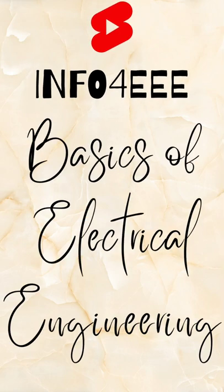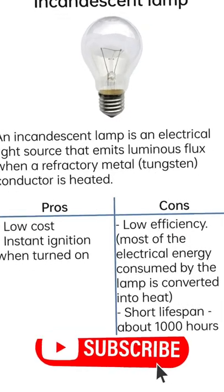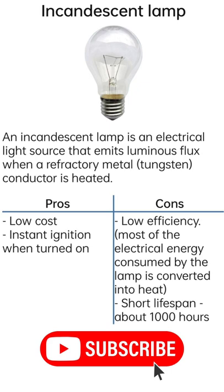Welcome to INFO 4EEE, Basics of Electrical Engineering. An incandescent lamp is an electrical light source that emits luminous flux when a refractory metal tungsten conductor is heated.